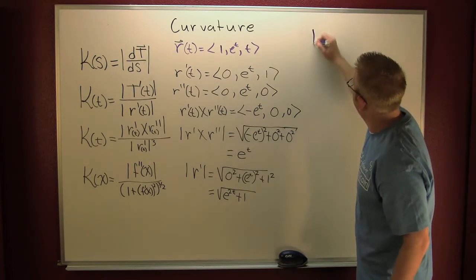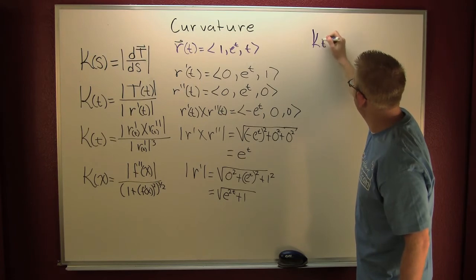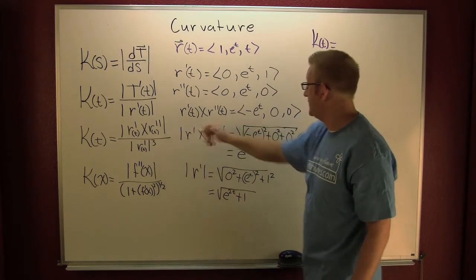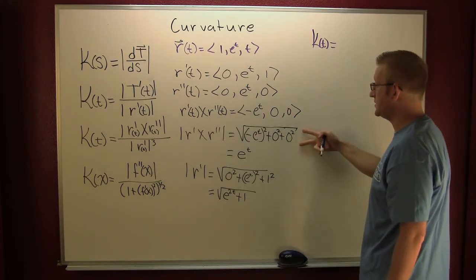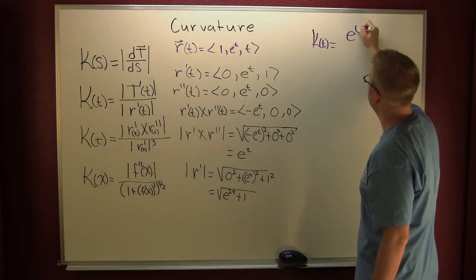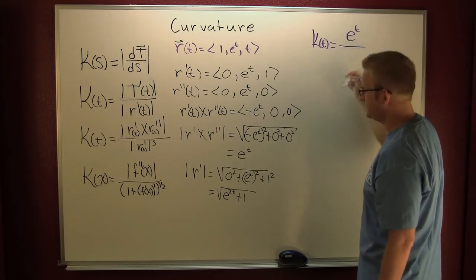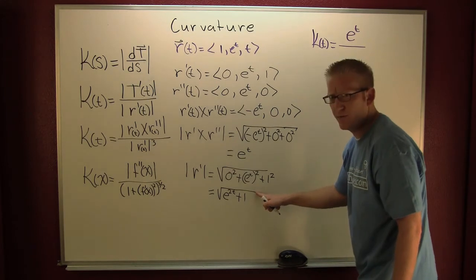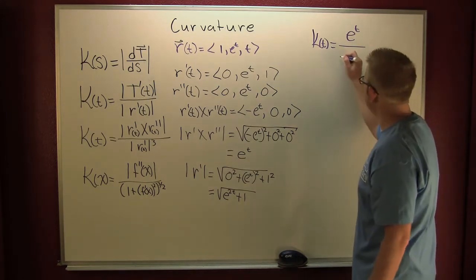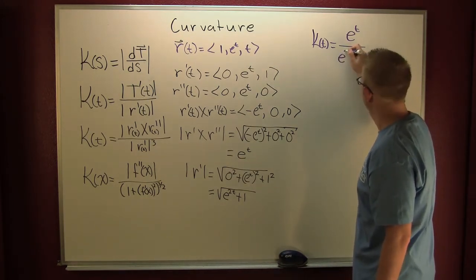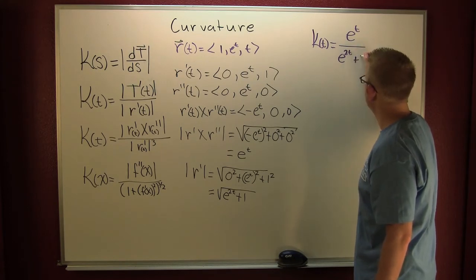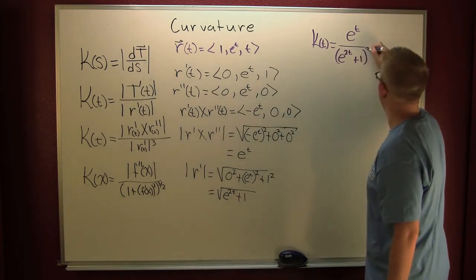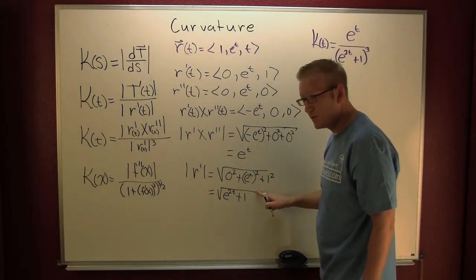So my curvature as a function of the parameter t is going to be using this guy, the magnitude of the first cross the second or e to the t divided by this guy to the third. I'm going to write that with rational exponents. And this is going to be e to the two t plus one. And then that's to the third power. And then that's the square root.